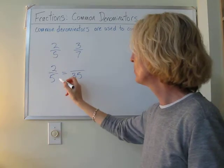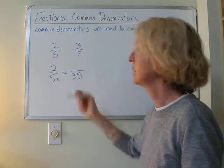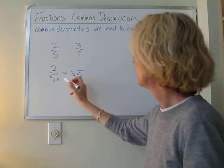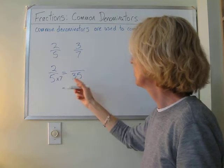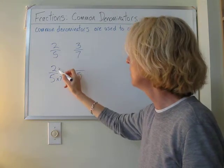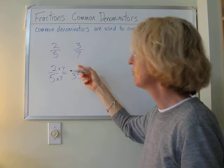What do we have to multiply 5 by in order to get up to 35? 7! Okay! 5 times 7 is 35, so then we have to multiply 2 by? 7! And that gives us how much? 14!